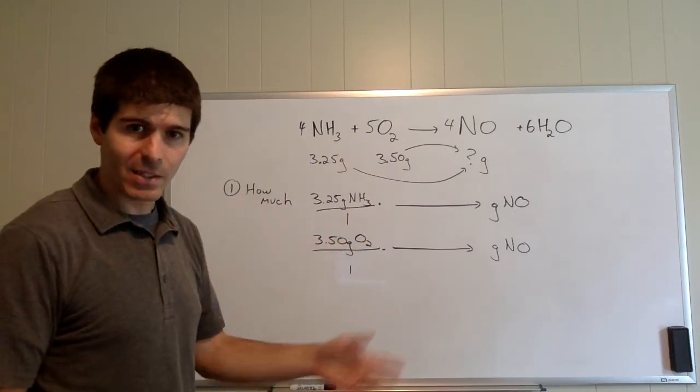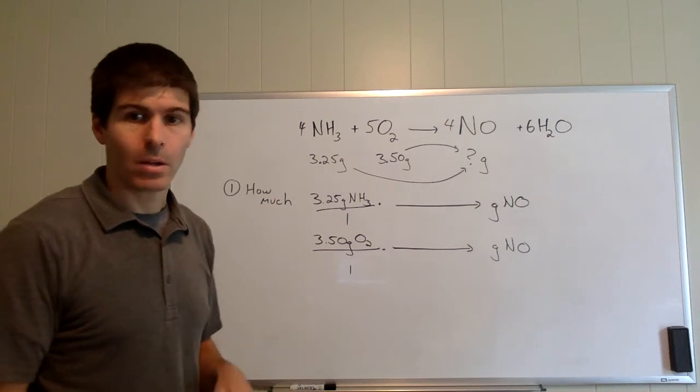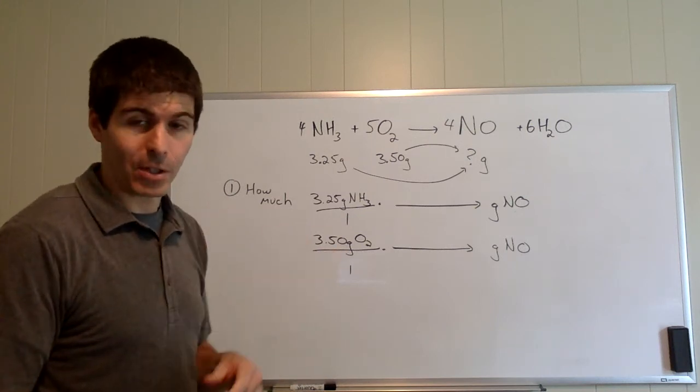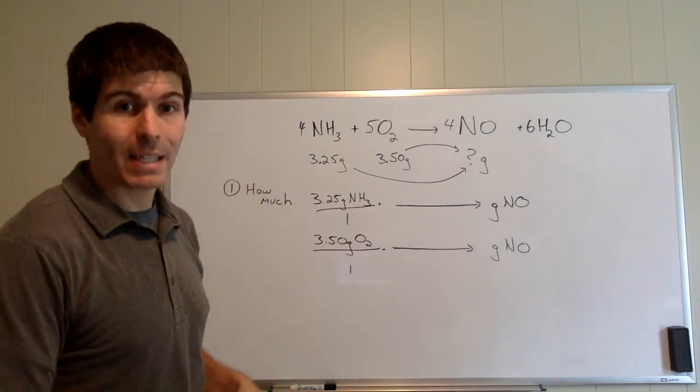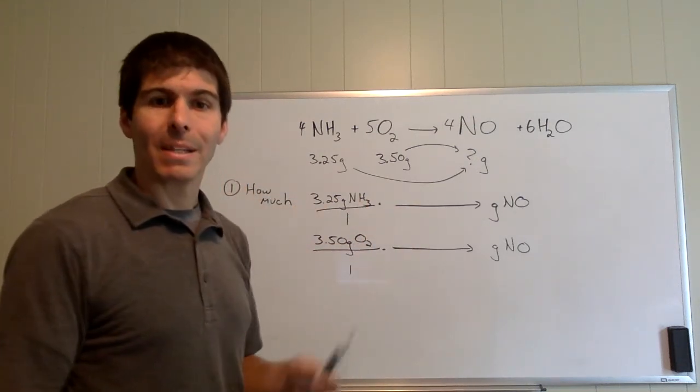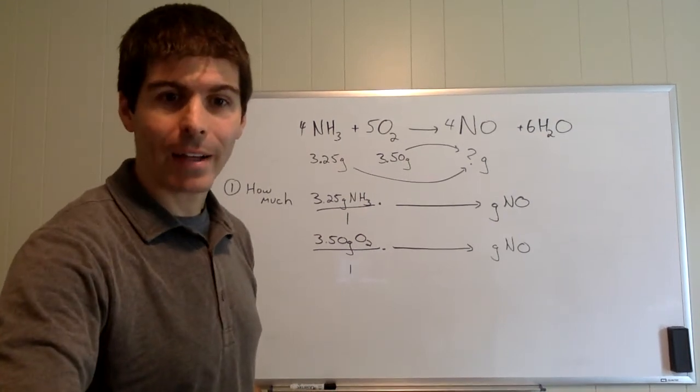One of them will make less and that is how much you can make. You can only make whichever one makes less. You don't want to add them together. One of them will make less. That makes whichever one makes less the limiting reactant and it makes the other one the excess reactant.